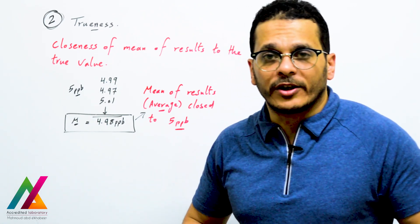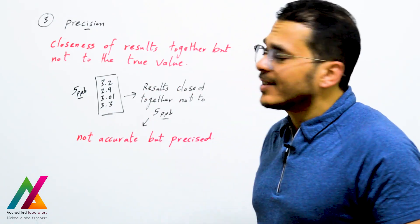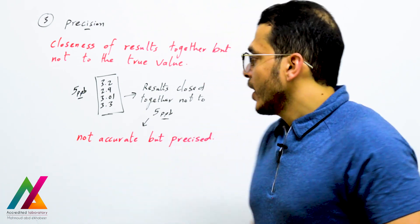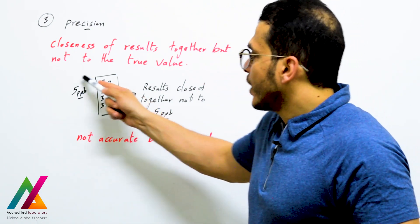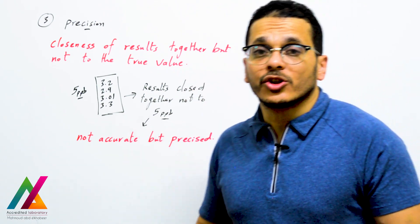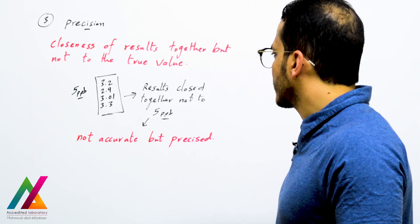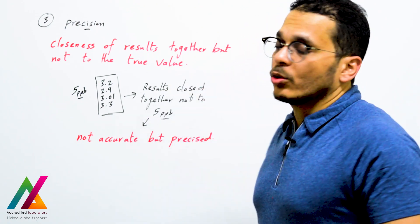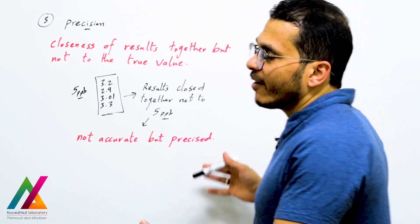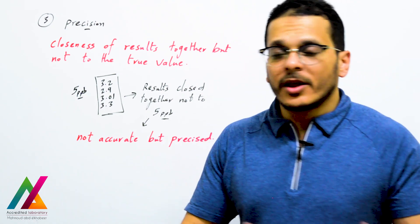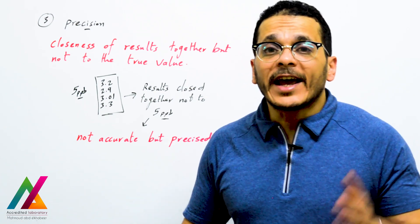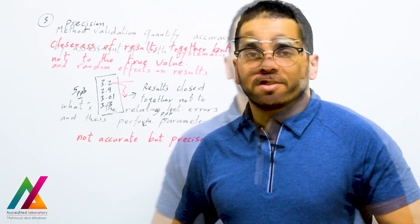Precision, as in the Eurachem guideline, is the closeness of results together but not necessarily to the true value. For example, if you spike with 5 ppb and get 3.2, 2.9, 3.01 — all results are close to each other but not to 5 ppb, the true value. So results can be precise but not accurate. It is better to have results that are both accurate and precise.